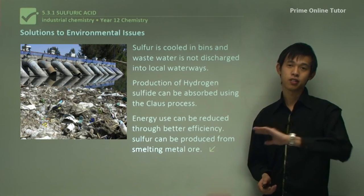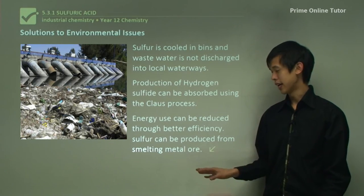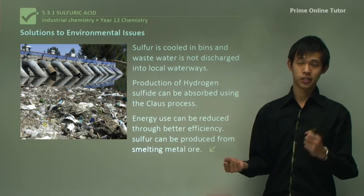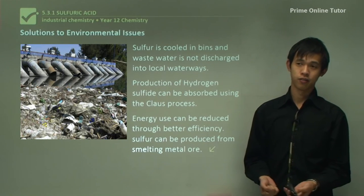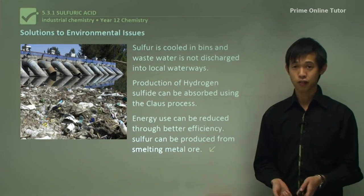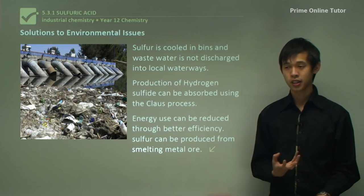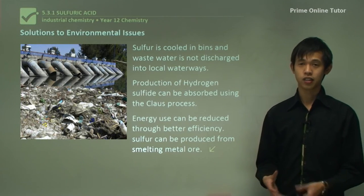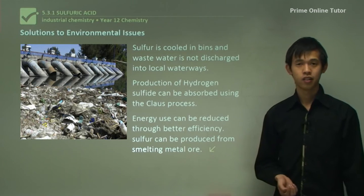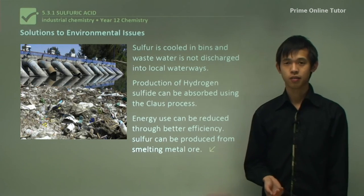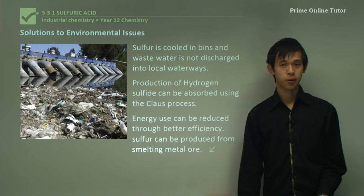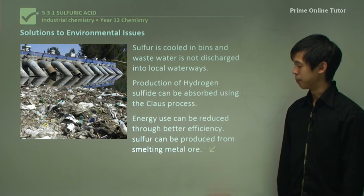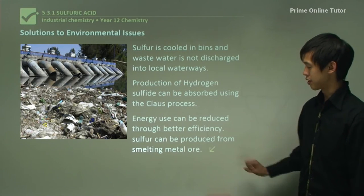Or we can sidestep the whole process by taking the sulfur dioxide produced when we smelt metals. When we dig out metals and smelt them to remove impurities, many of those impurities are sulfur-based, so we can get a lot of sulfur dioxide from smelting — rather than digging out pure sulfur that we'd eventually convert to sulfur dioxide anyway. This could sidestep the need for the Frasch process entirely.